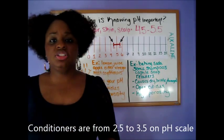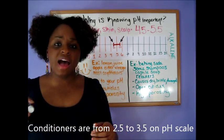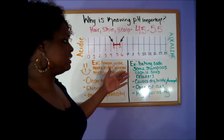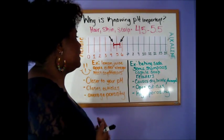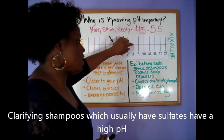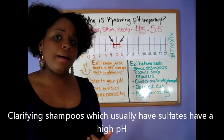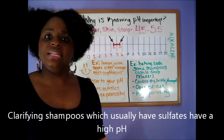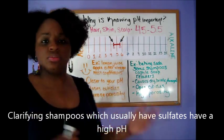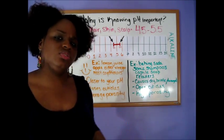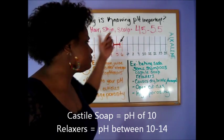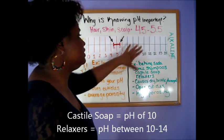Now most of your conditioners are anywhere between 2.5 or 3.5, so they are more on the acidic side. Now on the alkaline side of things, to give you an example, baking soda is considered to be very alkaline, it's an 8 on the pH scale. Some of your shampoos that you use that are clarifying or contain SLS are considered to be more alkaline. I don't know the specific pH, but I know those are more alkaline. Castile soap is about a 10 on the pH scale, while most of your relaxers are between a 10 and a 14.